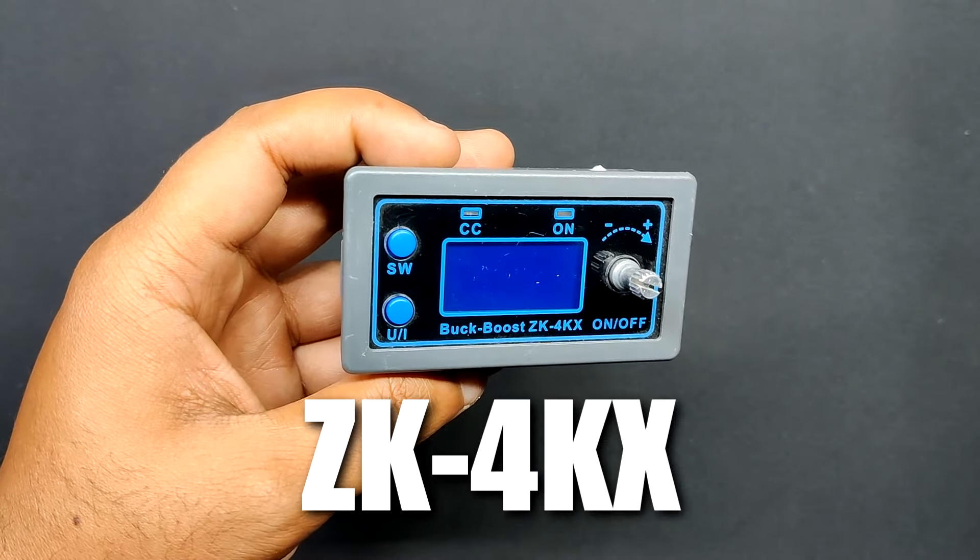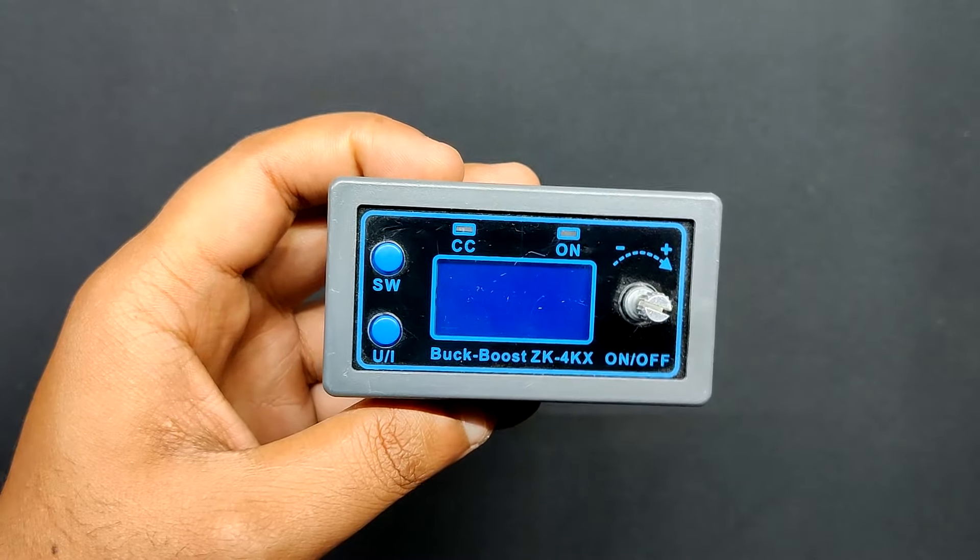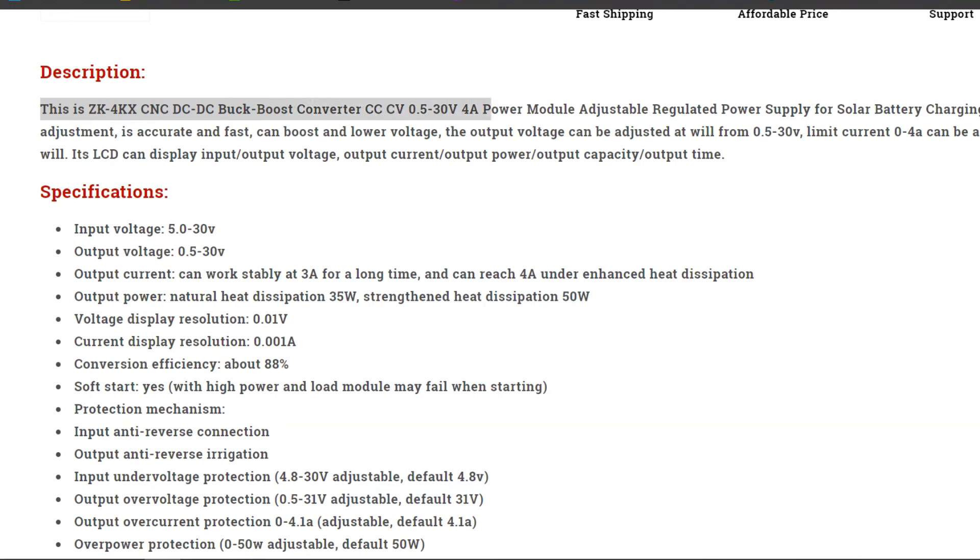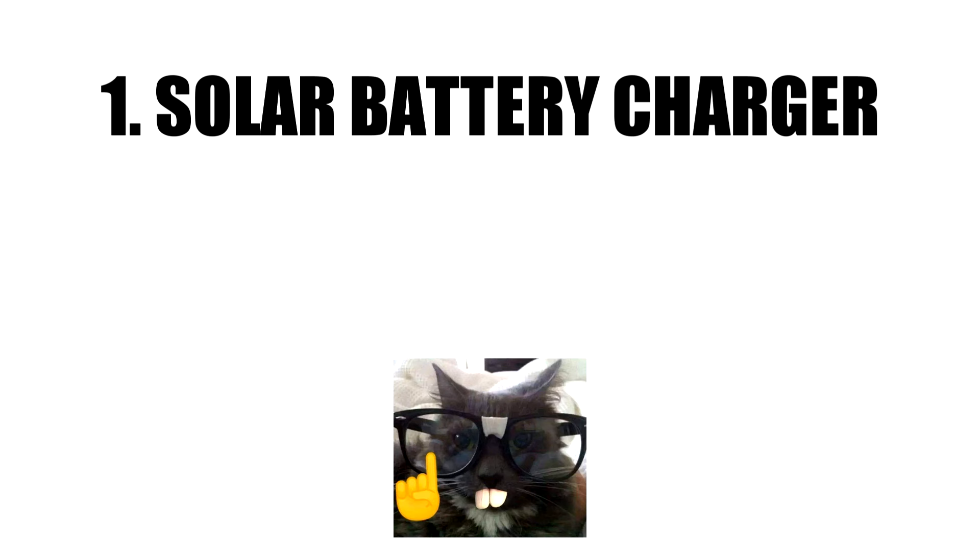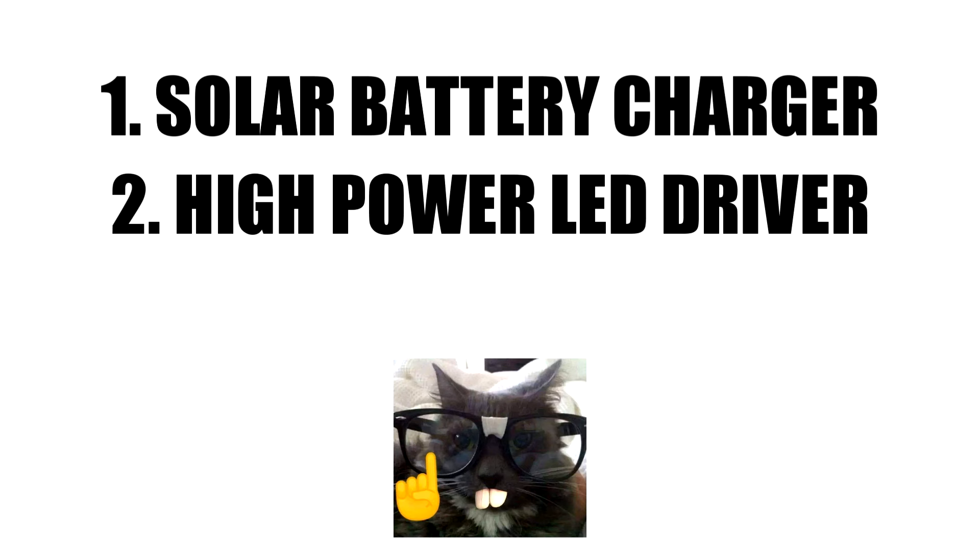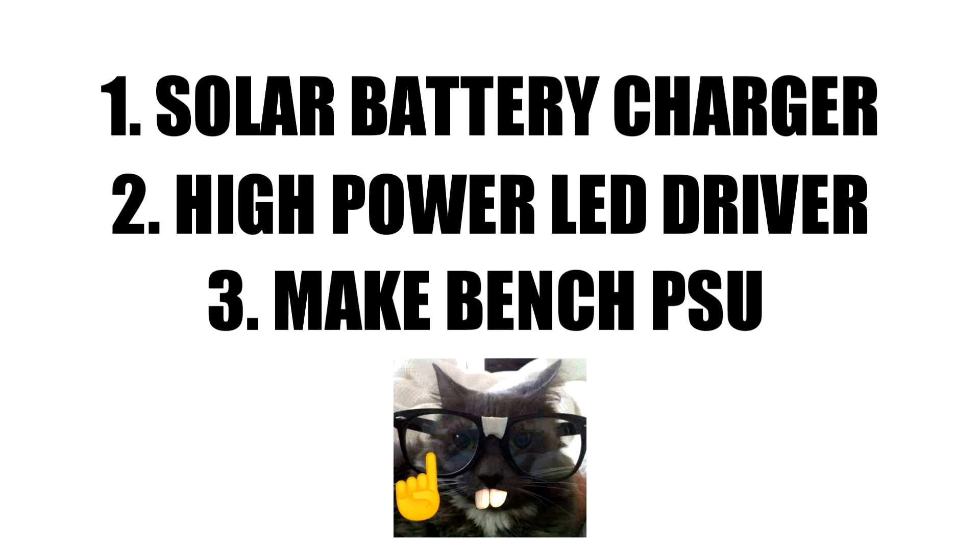Here we are using the ZK4KX DC-DC buck boost converter module, an adjustable regulated power supply module with a voltage range of 0.5 volt to 30 volt and 4 amps. It can be used for a number of power related applications such as solar battery charger, as a boost converter to drive high power LEDs, or even to create a bench power supply.